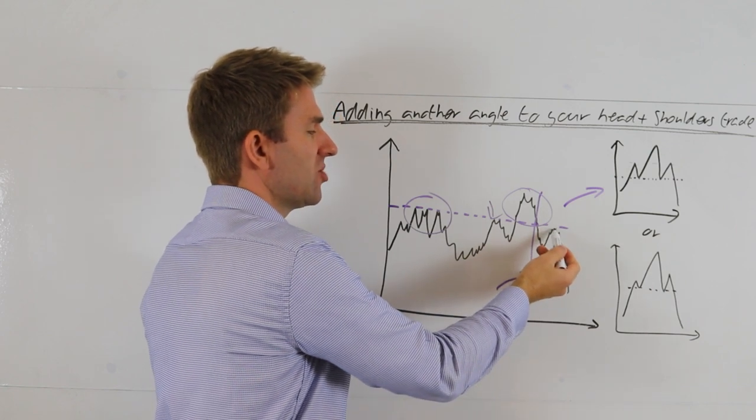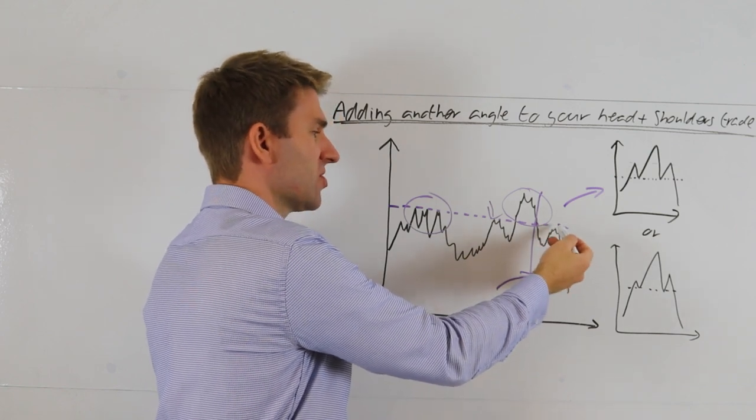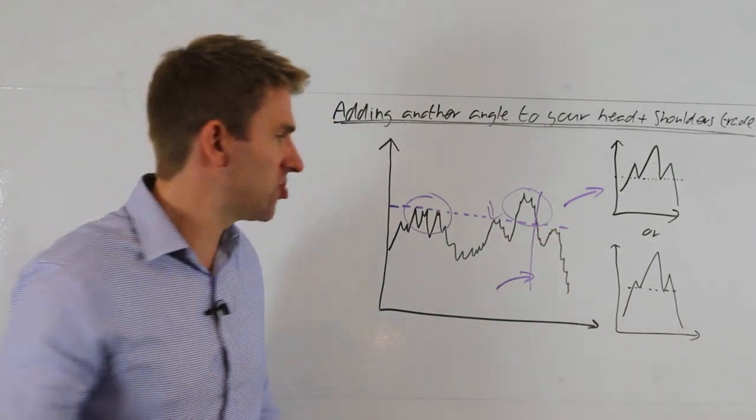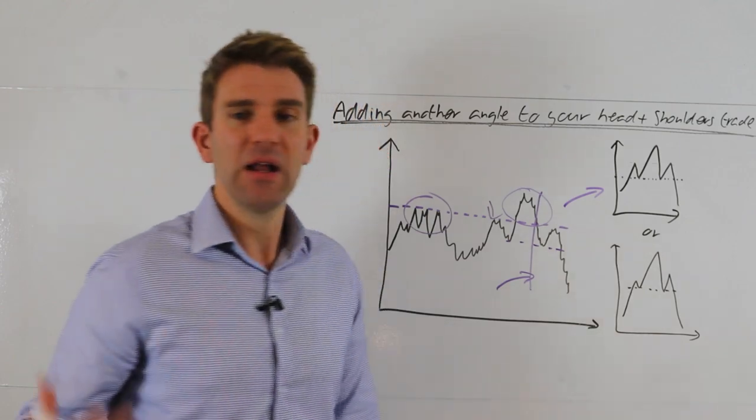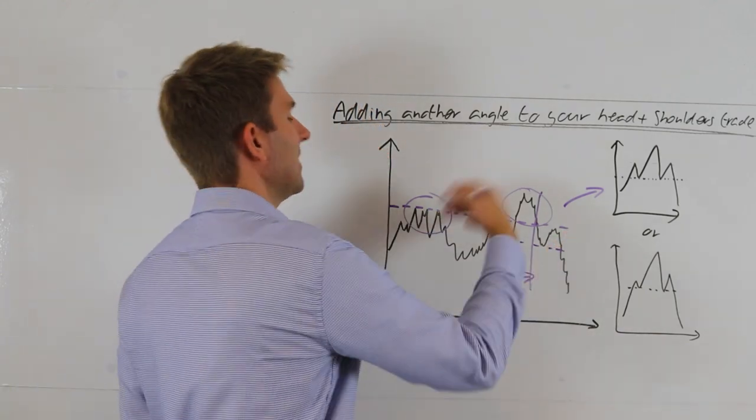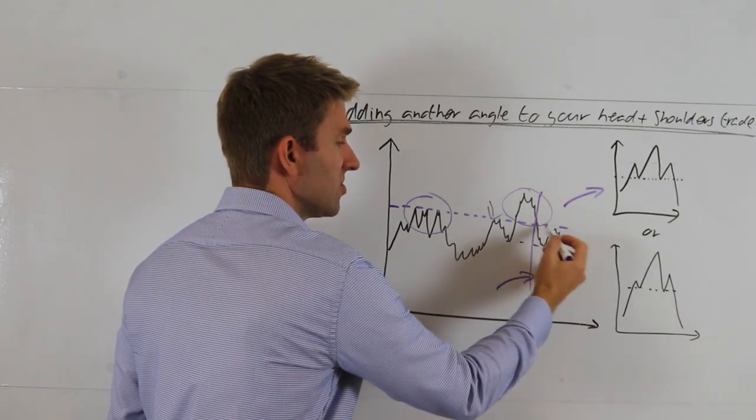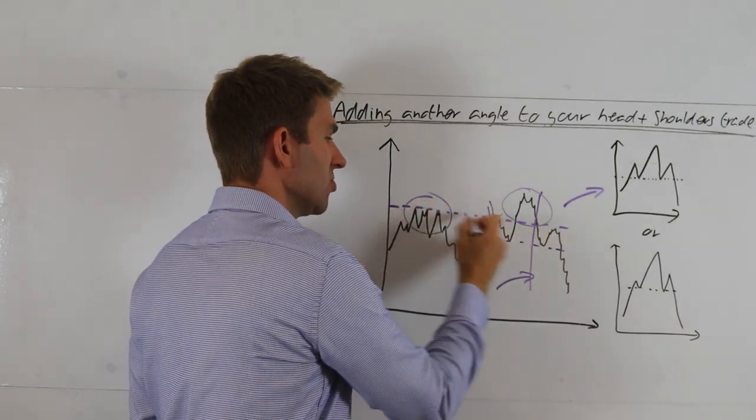At this point now, we can trade it like a traditional head and shoulders. We can look to short on the neckline. But for me, because we've added this extra layer in, we can be a little bit more clever with it. I think we can look and say well actually why don't I leverage on the fact that resistance level is there and trade that.